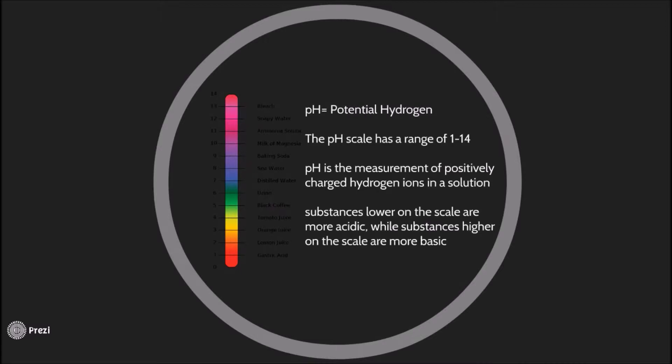A few examples of the acidic substances would be gastric acid, lemon juice, orange juice, and even urine. An example of more basic substances would be bleach, soapy water, ammonia solution, even seawater.